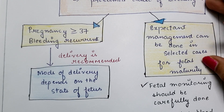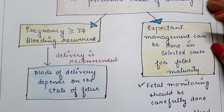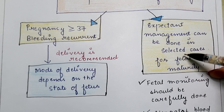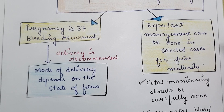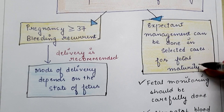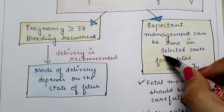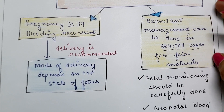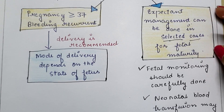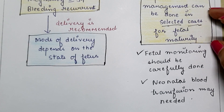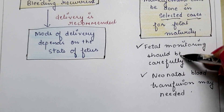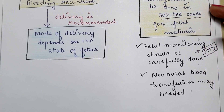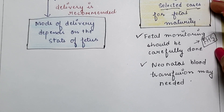Next is expectant management — used when the pregnancy is less than 37 weeks and the baby is not mature enough. Expectant management can only be done in selected cases for fetal maturity. If there is no persistent or recurrent bleeding, expectant management is done. If there is continuous bleeding, corticosteroids should be given to mature the fetal lungs and immediate delivery should be done. In selected cases with no persistent bleeding, careful fetal monitoring — including fetal heart rate monitoring — should be performed. Decreased fetal heart rate indicates decreased blood supply and risk of fetal death, so immediate management is needed.